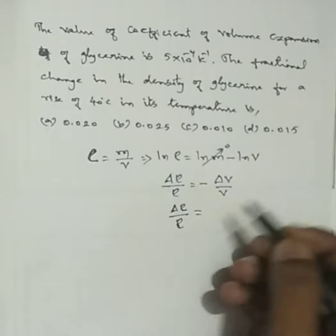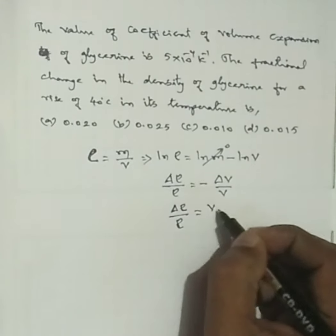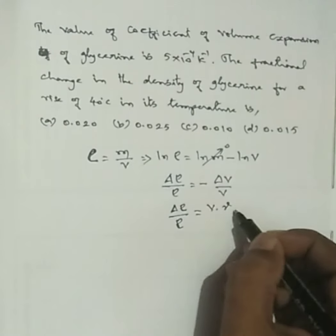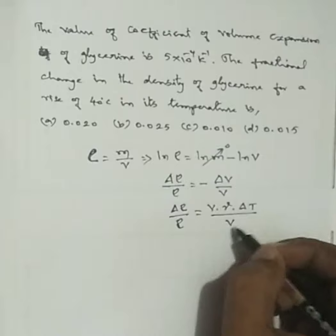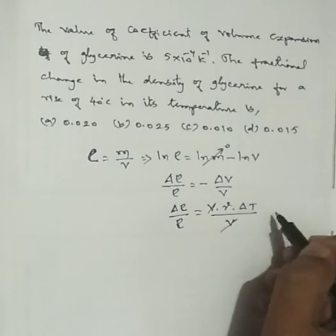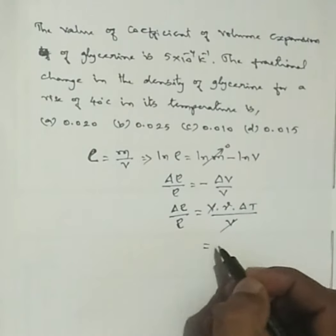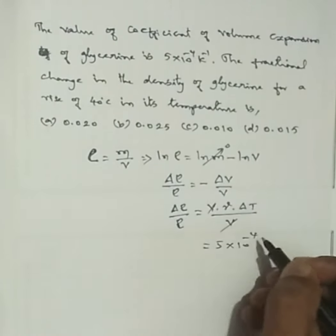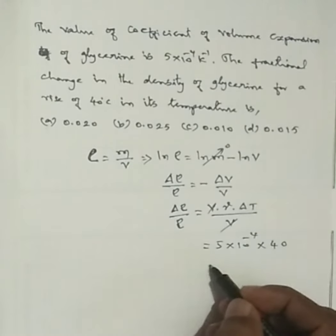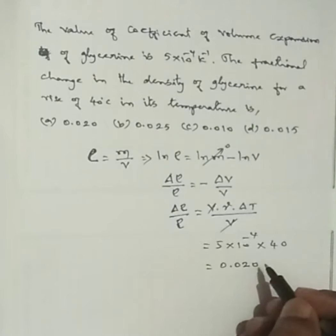Fractional change in density equals the coefficient of volume expansion multiplied by the temperature difference, which is 5 into 10 to the power minus 4 multiplied by 40. The answer is 0.02.